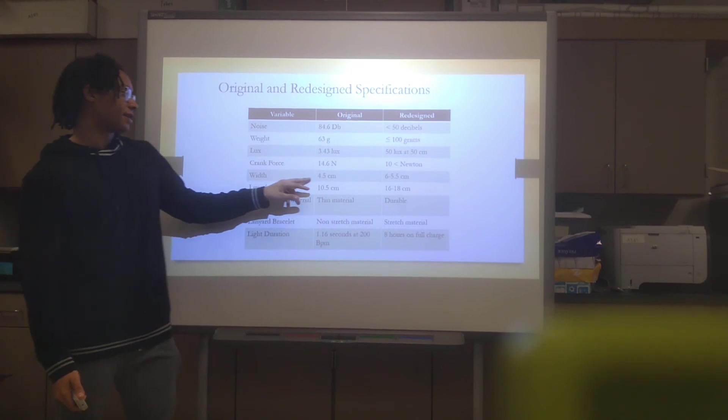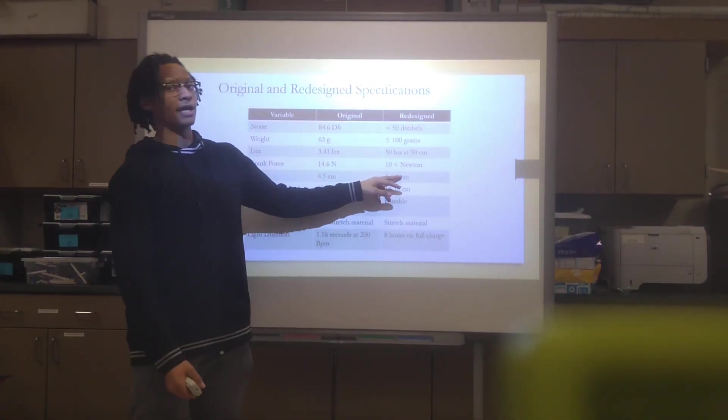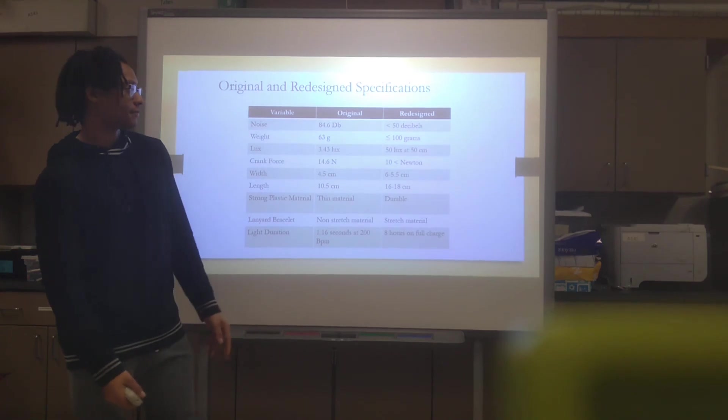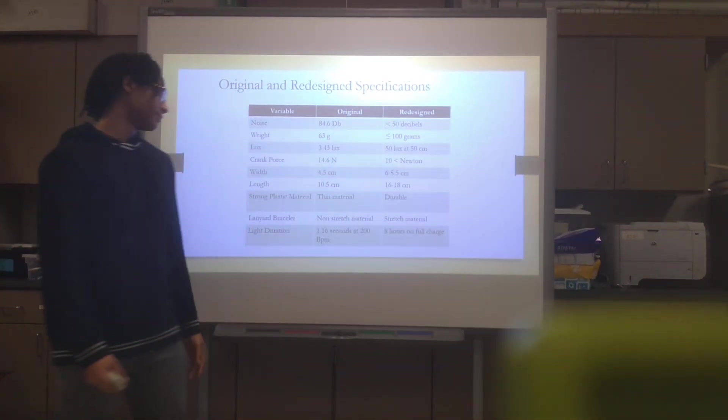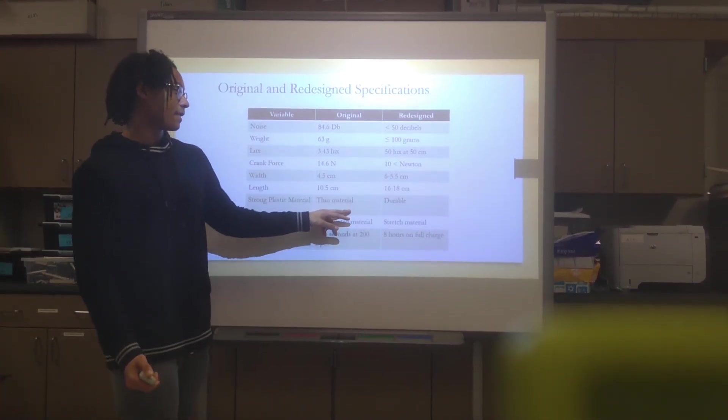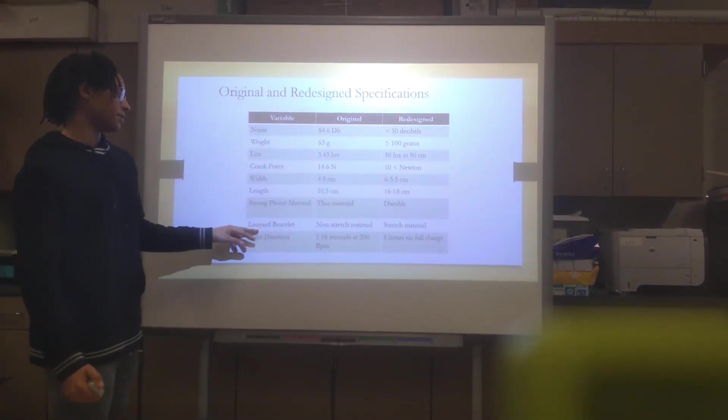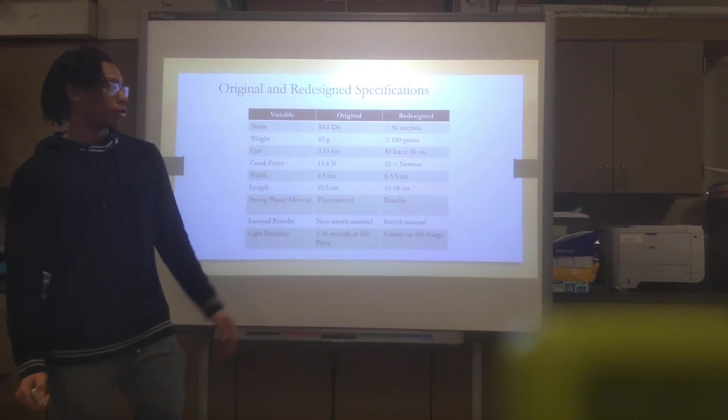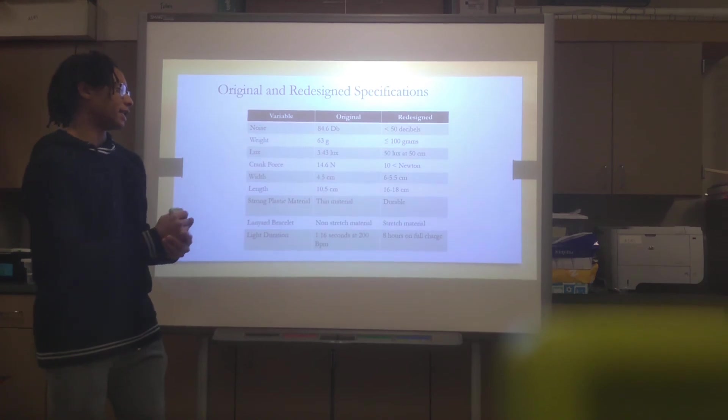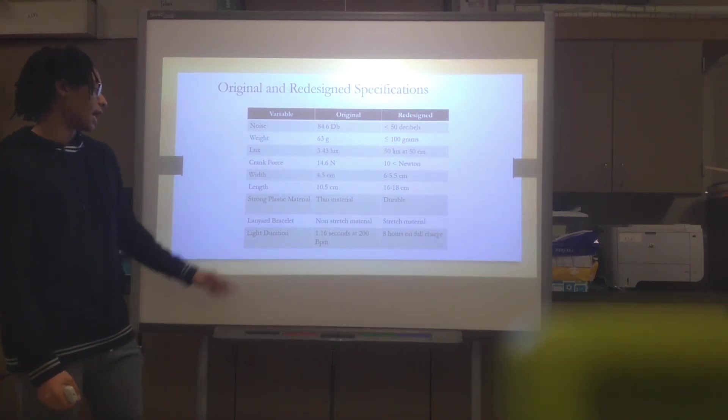Its width wasn't really a factor. It's 4.5 centimeters on the original and it's now 6 to 5.5 centimeters. The length, it was 10.5 centimeters and is now 16 to 18 centimeters. The material on the original was thin and cheap feeling, so it is now thicker and more durable. The bracelet for the flashlight on the original had a non-stretch material which made it hard for your hands to fit in the bracelet, and it's now with a stretch material so you can better do so.